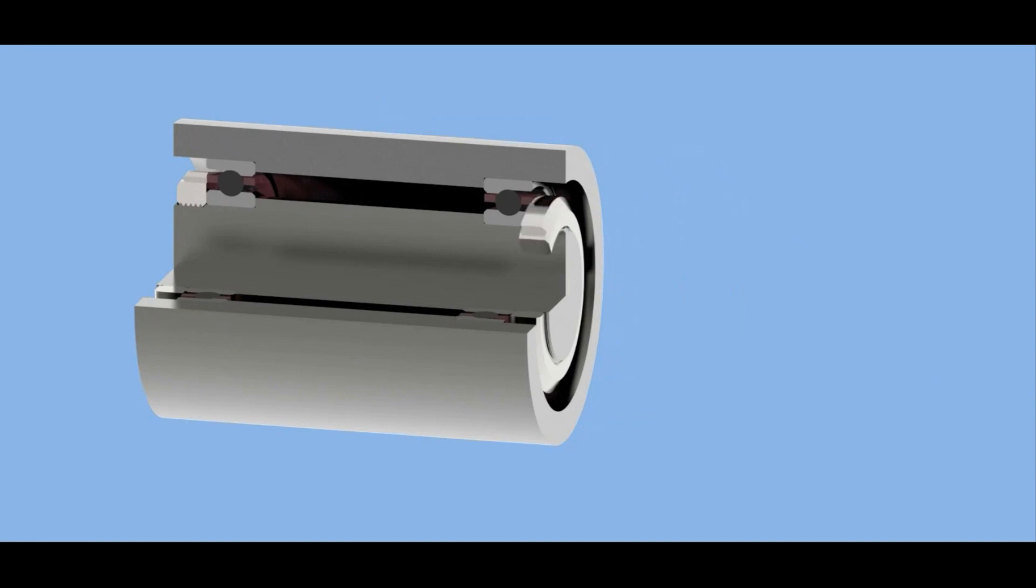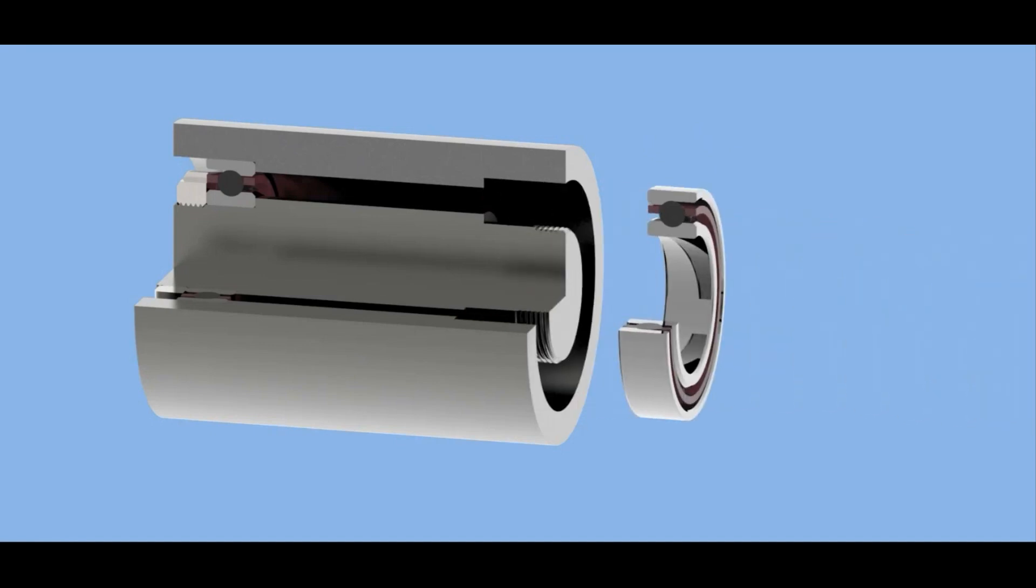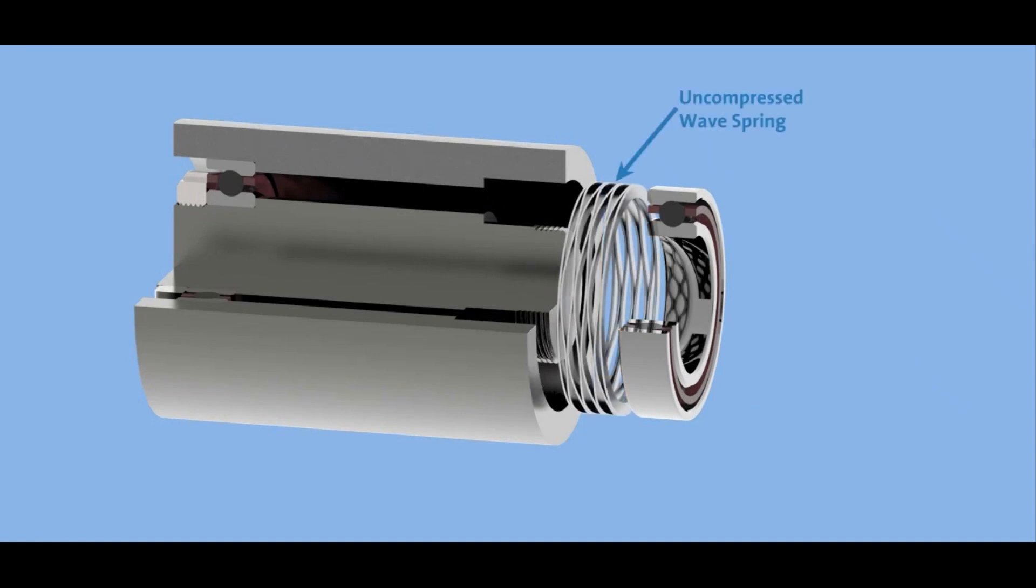Now, these steps can also be used for a spring preload assembly. All we need to do is pull this bearing out, and then add our spring and open up our space for our spring to sit nicely in the housing.